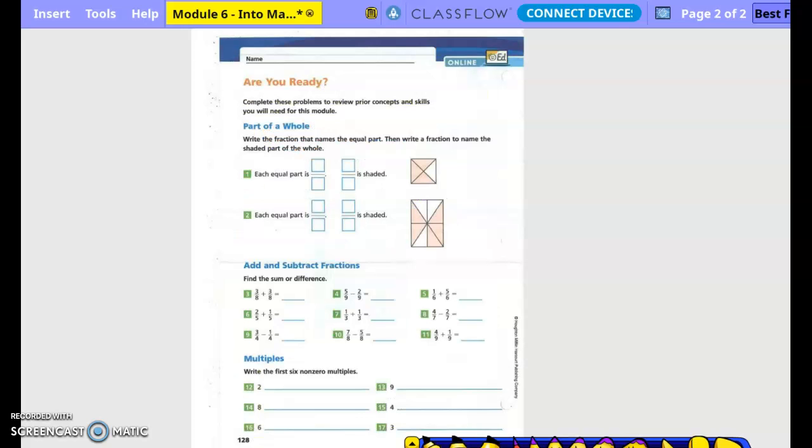Are you ready? Complete this problem to review prior concepts and skills. You will need for this module part of a whole. Write the fraction that names the equal part, then write a fraction to name the stated part of the whole. So each equal part is what? One fourth. Right? And how much is the shaded part? Three fourths. Each equal part is how many different pieces do we have there? Eight. So one eighth. And the shaded part is five eighths.